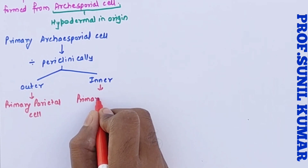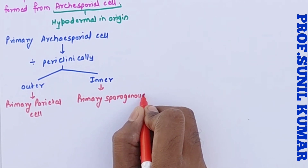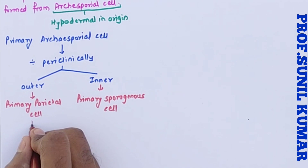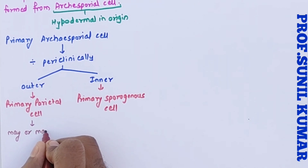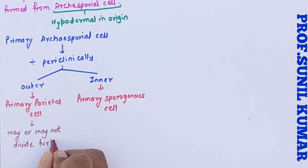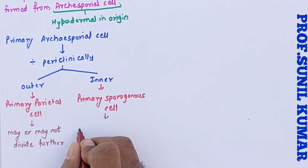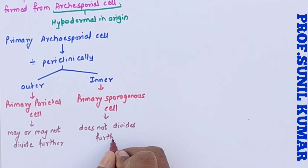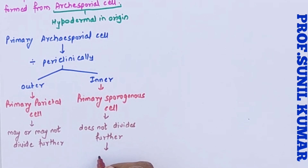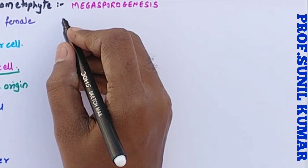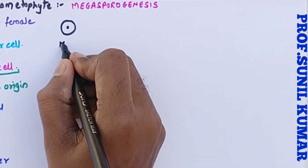The primary parietal cell may or may not divide further — it is totally dependent on its nature. But the primary sporogenous cell will definitely not divide further, and it is going to work as the MMC. So the primary sporogenous cell functions as the mega spore mother cell, which is diploid in nature.